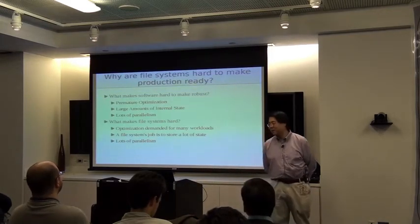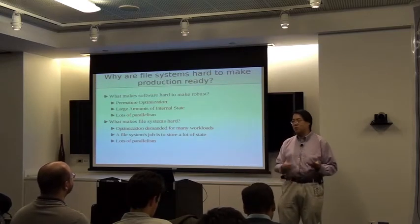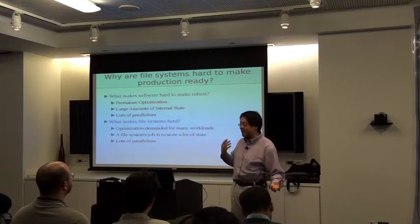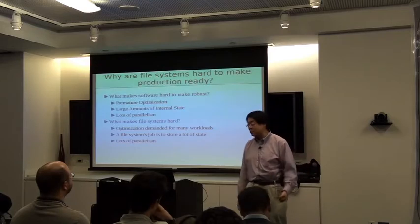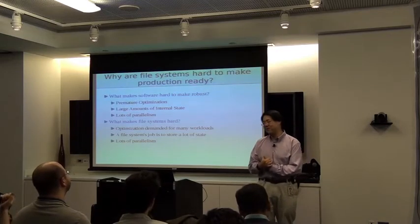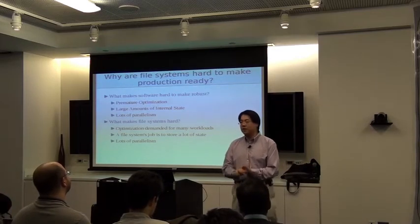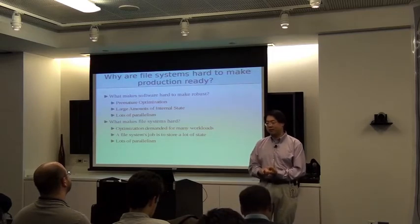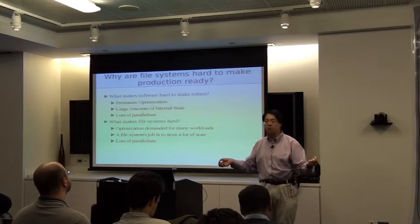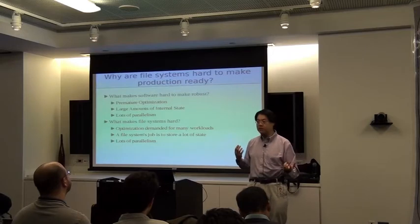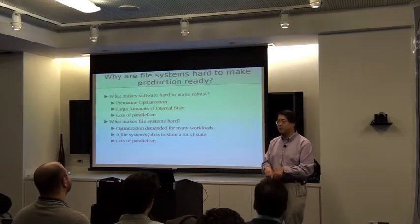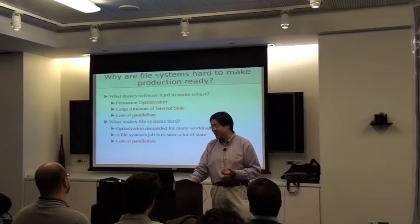What makes file systems hard? People use file systems for lots of different things, so we're always being asked to optimize for many different workloads. File systems are supposed to store state — terabytes of state sometimes. And in order to make things fast, we have lots of parallelism: every single process may be accessing the file system at the same time, potentially hundreds of processes on hundreds of cores, all trying to touch the same directory or file — which means the parallelism is pretty much the worst case.